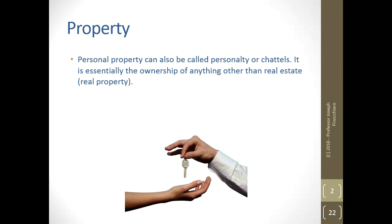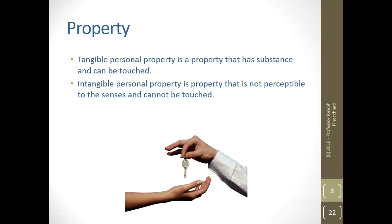Bailments. Personal property can be called personality or chattels — you're going to see that a lot when we look at torts. It is essentially the ownership of anything other than real estate or real property. Within chattels, tangible personal property has substance and can be touched; intangible is the exact opposite — not perceptible, cannot be touched.